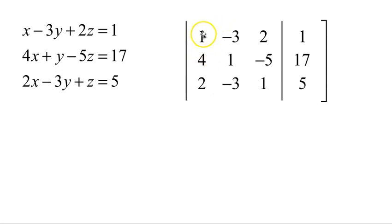We know our process: we need a 1 in the upper left, which we have. If we don't, switch the equations around. If that's not possible, divide everything by that term to make it 1, and then the 2 underneath need to become zeros.